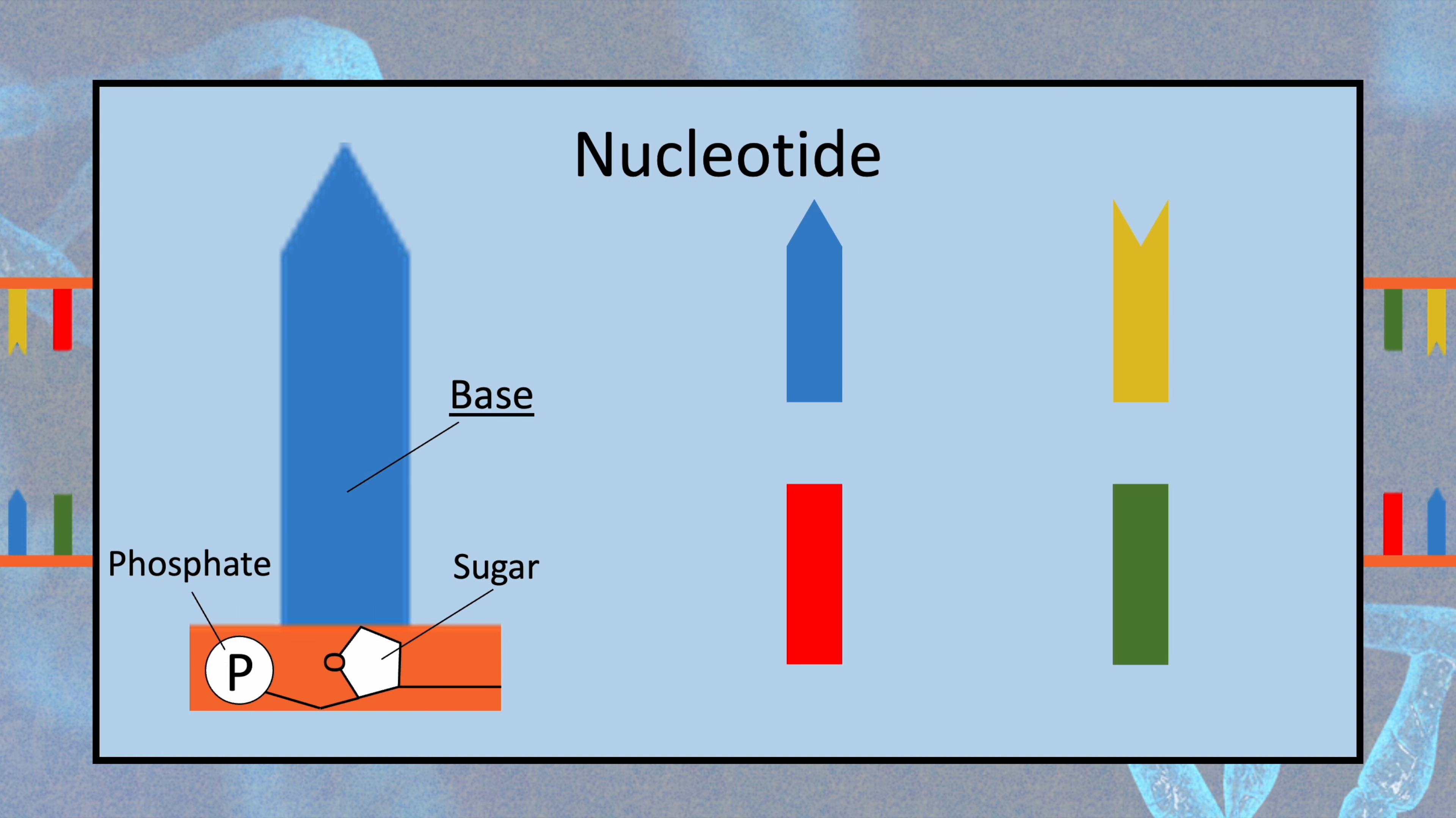There are four different types of bases called adenine which is symbolized by an A, thymine which is symbolized by a T, guanine which is symbolized by a G, and cytosine which is symbolized by a C.